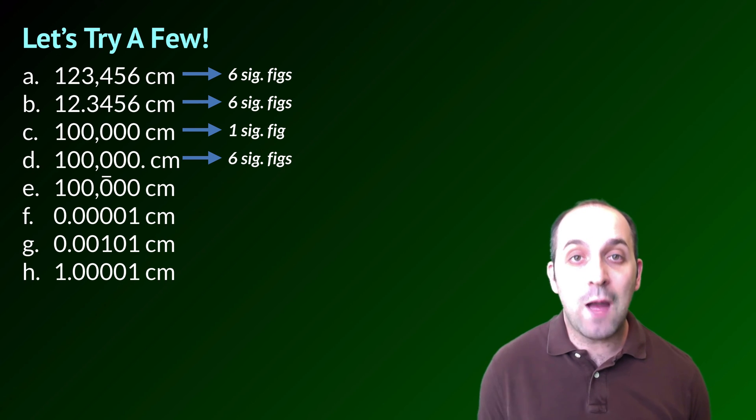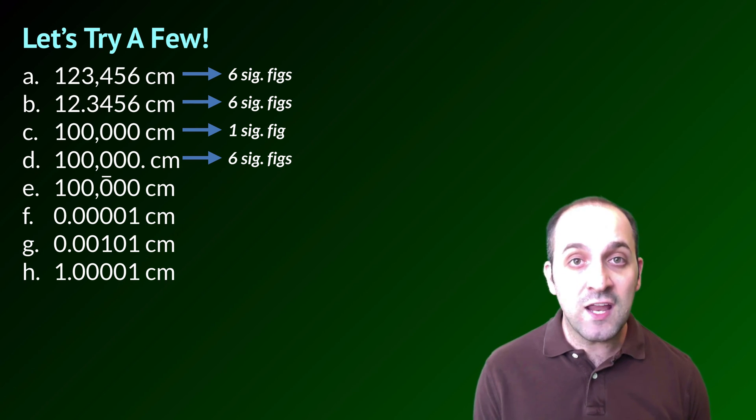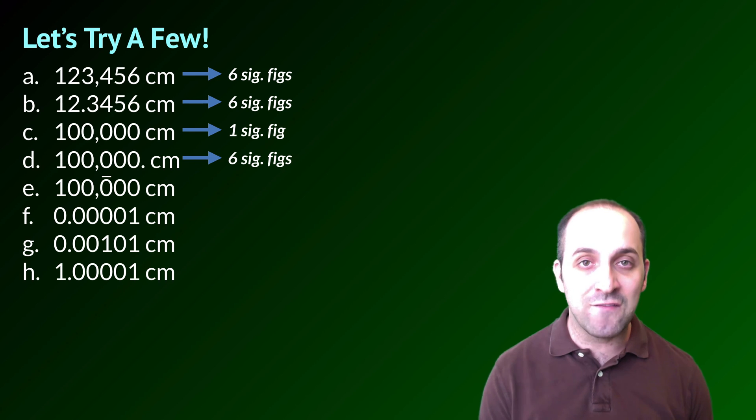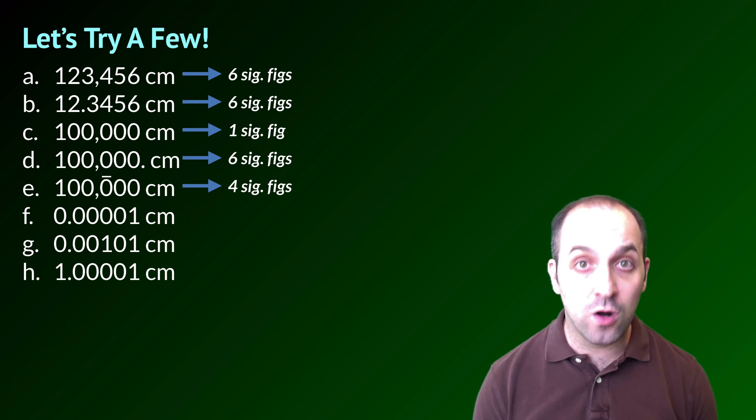Of course, a more common situation would be like something in E, where we know that the first three zeros are significant, but the last two are not. In that case, we put a line over the last significant zero, which indicates that it and the ones that came before it are all significant. So for E, there are four significant figures for that particular reason.